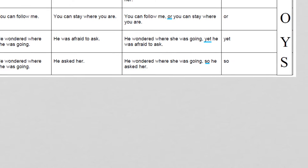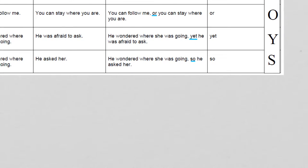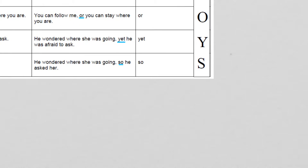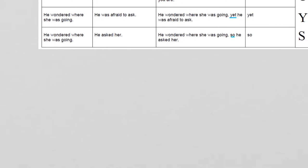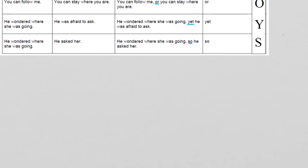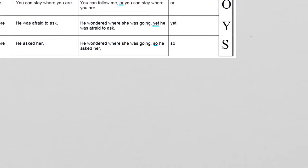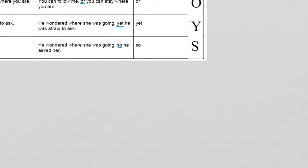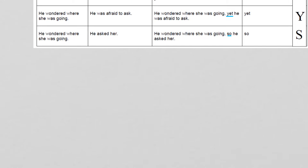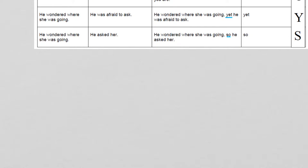Next: 'You can follow me' and 'You can stay where you are' — 'or' works really well here, as it's used when there are two different options: 'You can follow me, or you can stay where you are.' Then: 'He wondered where she was going' and 'He was afraid to ask' become 'He wondered where she was going, yet he was afraid to ask.' 'Yet' is kind of like 'but,' though we use 'but' more often. The three conjunctions used most often are 'and,' 'but,' and 'or.'